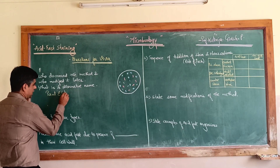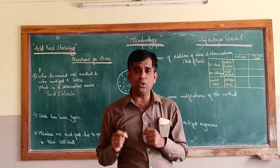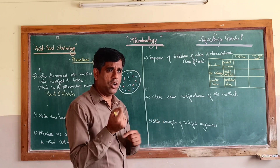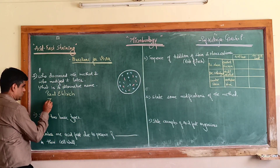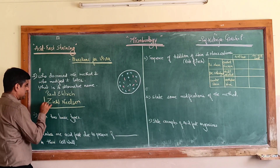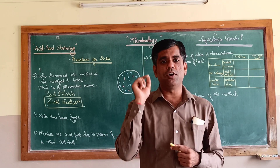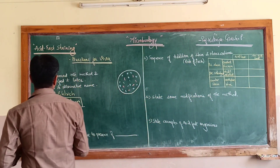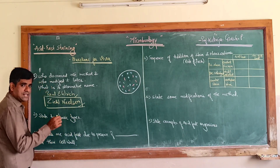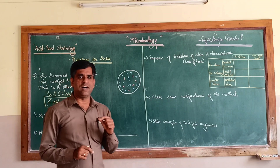Paul Ehrlich - the one whom we credit for being the father of chemotherapy - in 1882 discovered this method of staining acid fast organisms. This was later modified by Ziehl-Neelsen. This particular method is therefore also called the Ziehl-Neelsen staining, or ZN staining, which is the alternative name for acid fast staining.